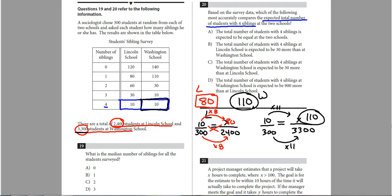So let's kind of go through and look at their choices and pick the right answer. The total number of students with four is expected to be equal. No. The total number of students with four siblings at Lincoln is expected to be 30 more than Washington. No. There's going to be 30 more at Washington than there is at Lincoln, according to my calculations. The total number of students with four siblings at Washington is 30 more. That's looking pretty good. That's what I got. And the total number is expected to be 900 more. That number is just kind of outrageous there. So correct answer there is C.